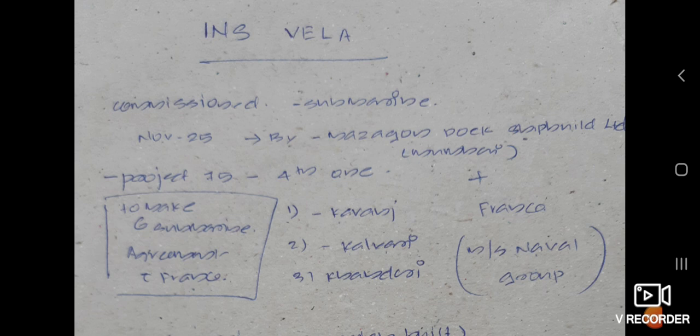So under this project 75, India in partnership with France will be making six submarines and so far these two countries together have made three submarines: Karanj, Kalveri, and Kanderi. And from France, it is MS Naval Group which is helping us to make these submarines.